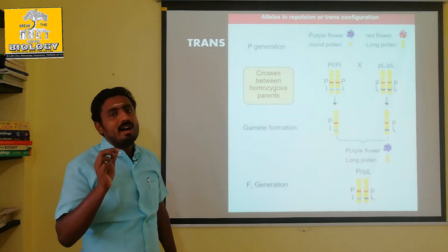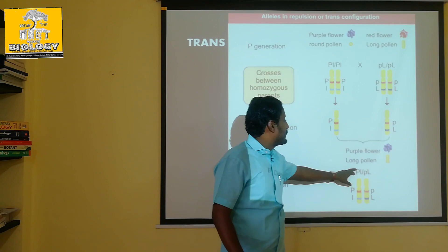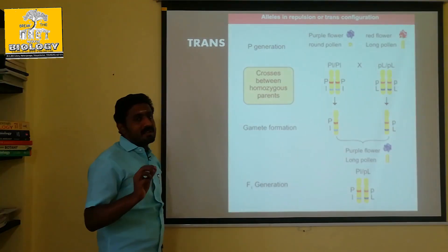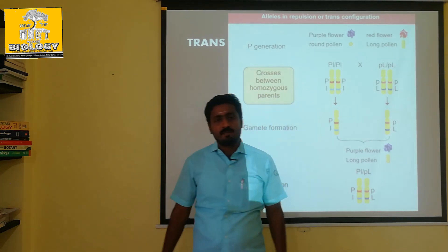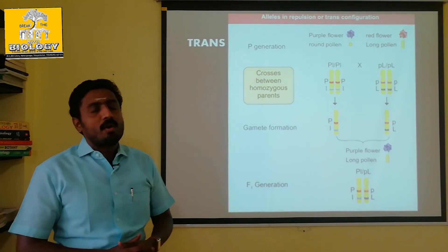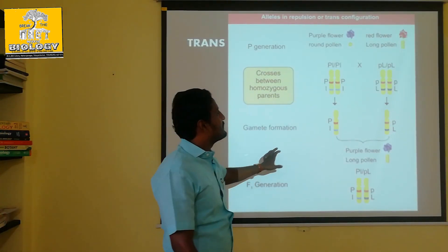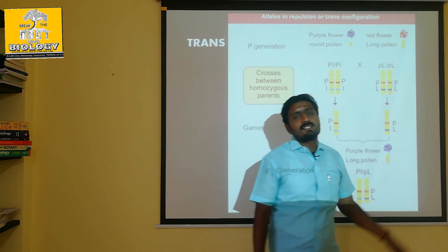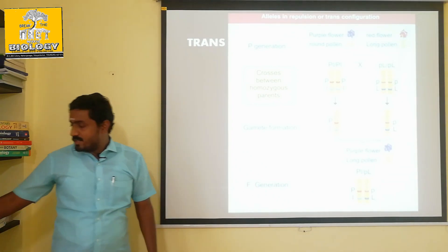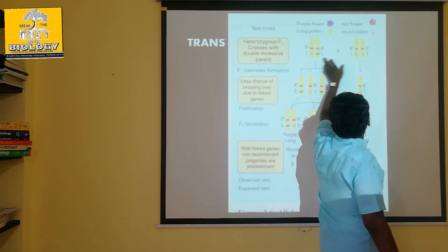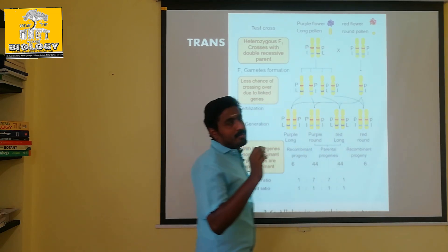If we have the result there, F1 is the same as F1. So let's see — this is the purple flower, long pollen. We know the F1 generation. In the F1 generation, we know F1 generation is used. P, P, L, L — this is a gamete. This is a gamete.